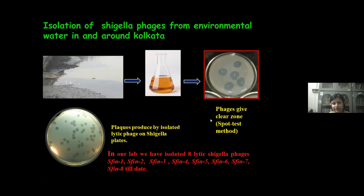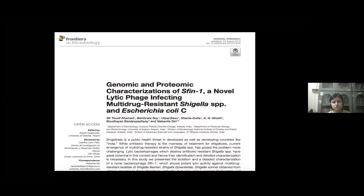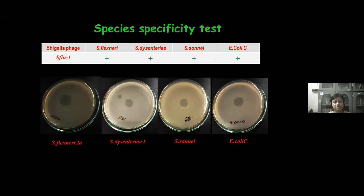Last year, we published our work on the characterization of SF-1 in Frontiers in Microbiology, and this is the first report of lytic Shigella phages from India. This phage SF-1 has host specificity against Shigella flexneri 2a, Shigella dysenteriae 1, Shigella sonnei, and most interestingly E. coli C also. So, this phage has a broad host range.